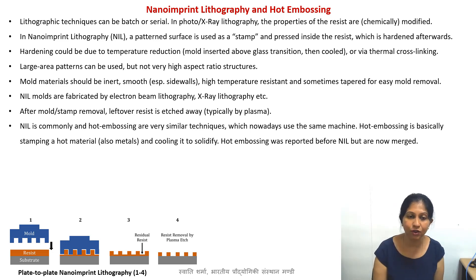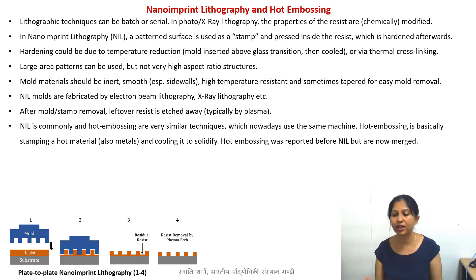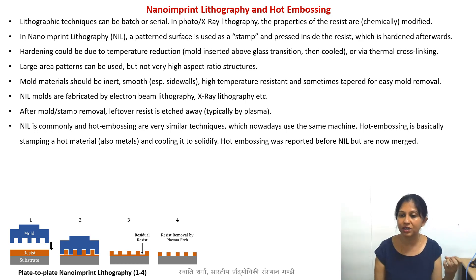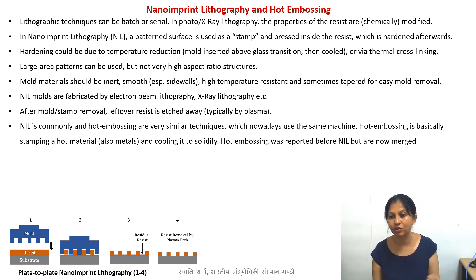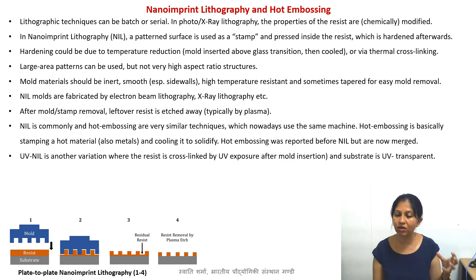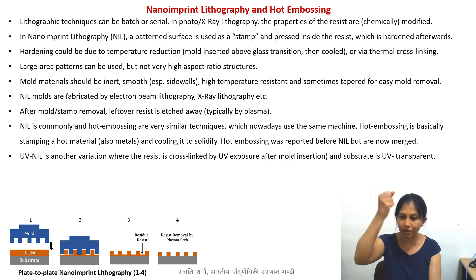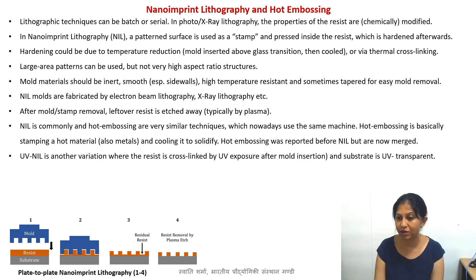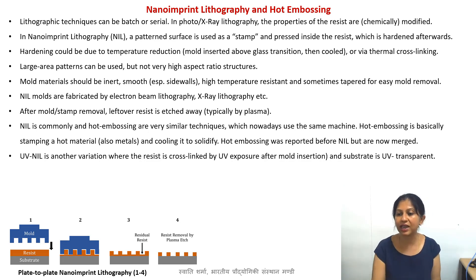Hot embossing and nano imprint lithography are closely related and somewhat debated. Hot embossing was reported first and refers to essentially the same technique. Nano imprint lithography is a broader term that also includes UV-based variants: you can use a UV cross-linkable resist and shine UV light while the stamp is inside the polymer to cross-link it. Hot embossing specifically refers to using heat — either exploiting the glass transition temperature or thermal cross-linking.